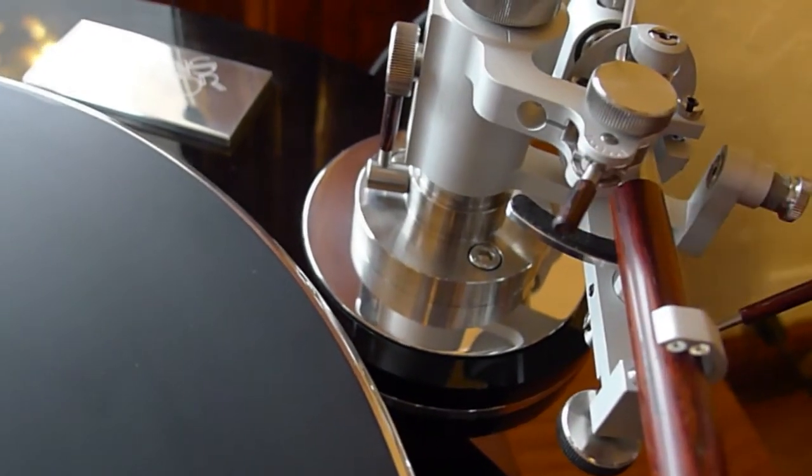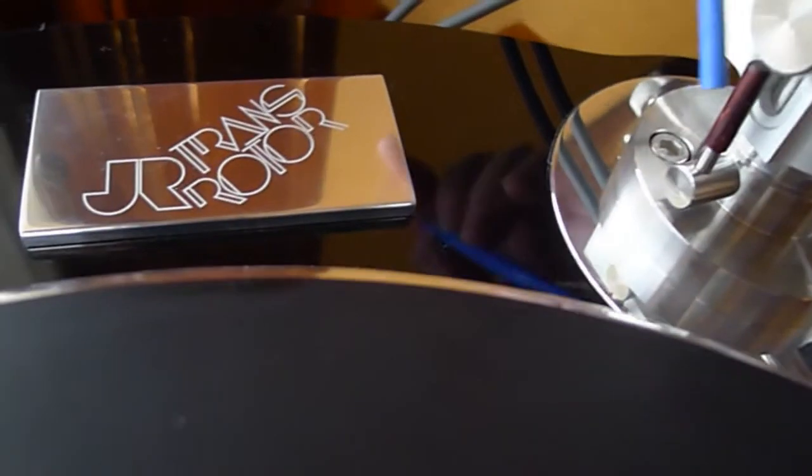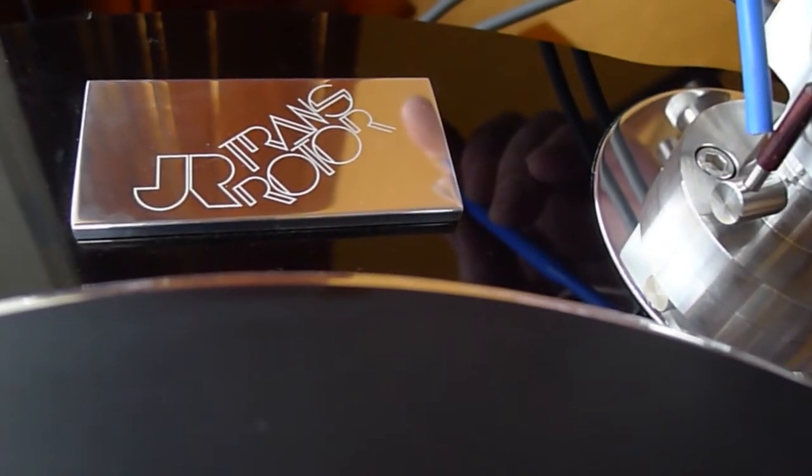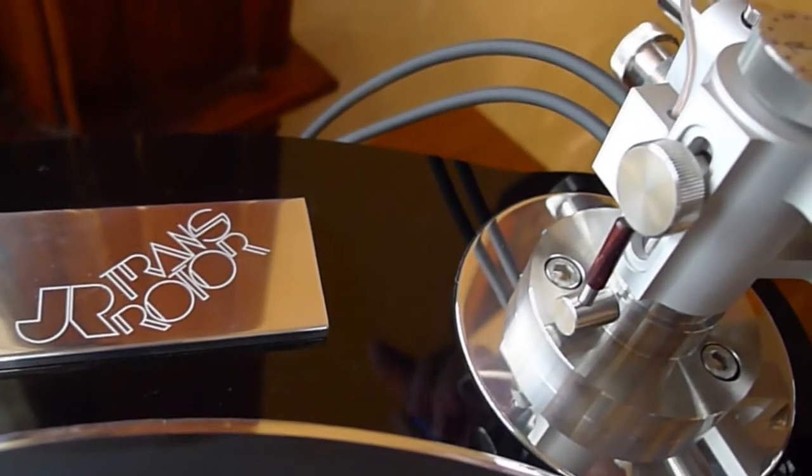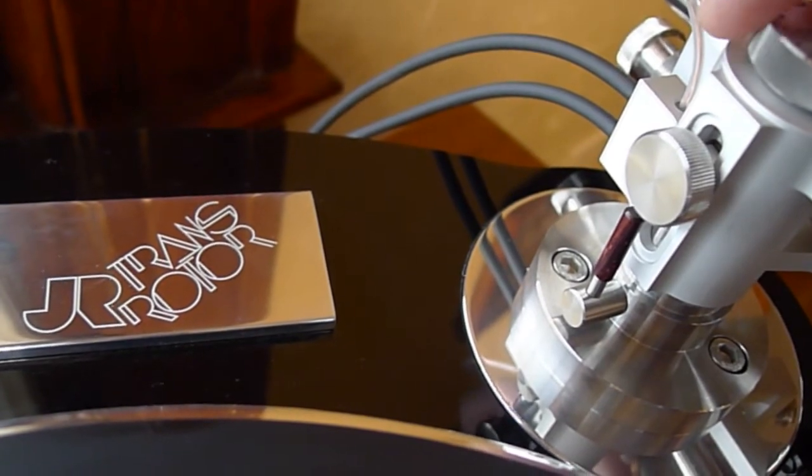Coming around, this is a unique feature to the Reed: azimuth on the fly. This is the gross adjustment for the VTA, and as we come around the top, this is the micro adjustment, and that is where you lock it down.